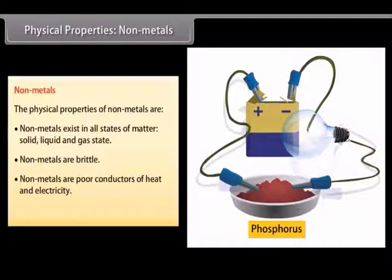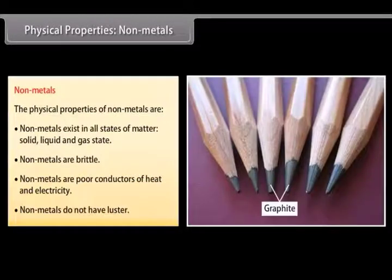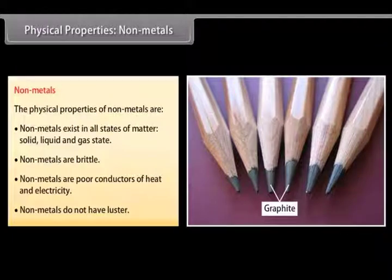Graphite, carbon is an exception as it is a good conductor of electricity and is used in making electrodes. Luster. Non-metals have no metallic luster and do not reflect light.